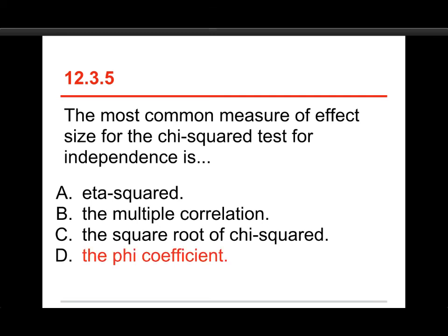And the answer here is the phi-coefficient. Eta-squared is the effect size for the analysis of variance. Multiple correlation is a step in the way towards R-squared, which is used in regression. Square root of chi-squared doesn't mean anything that I'm aware of. The phi-coefficient.